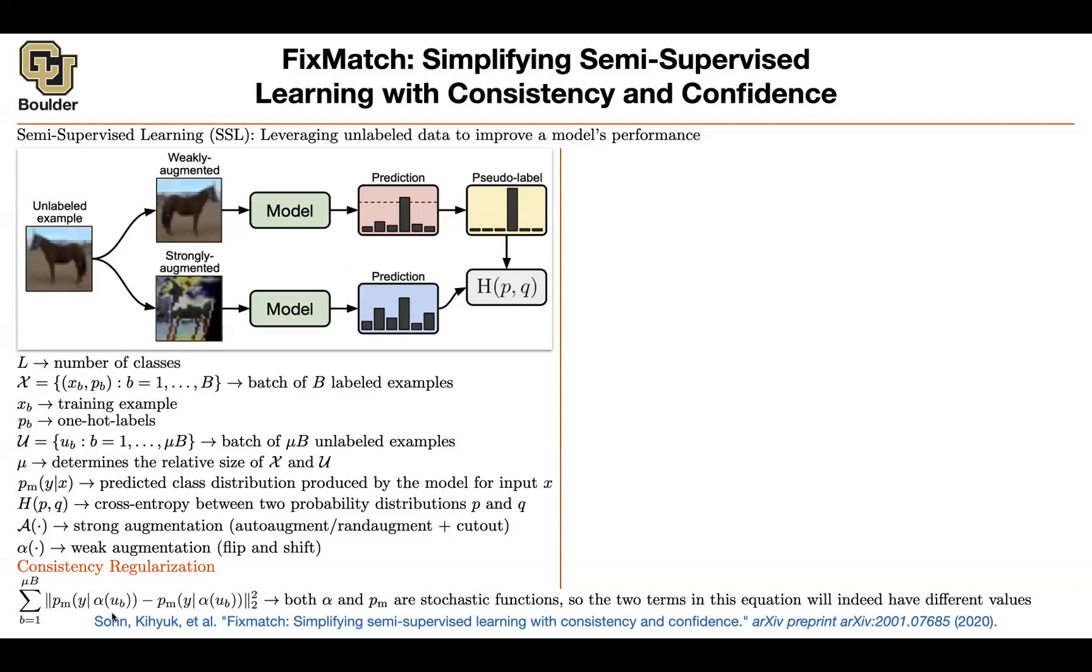Let's recap the type of ideas that we covered that were generalizing this consistency regularization idea. For one of them, the first paper that we covered, virtual adversarial training, alpha was adding perturbations to these images, and these were smartly chosen perturbations—these were adversarial examples for the models.